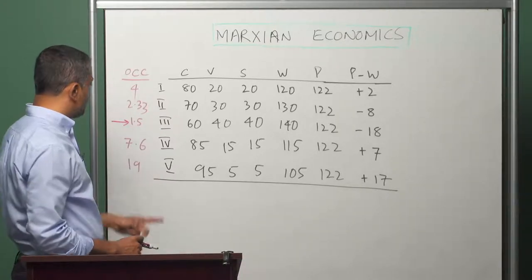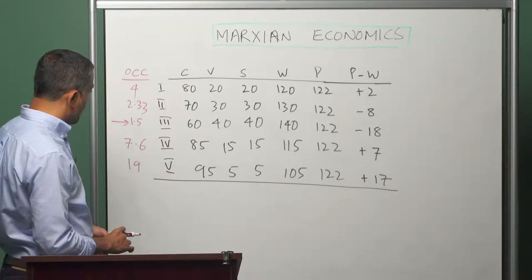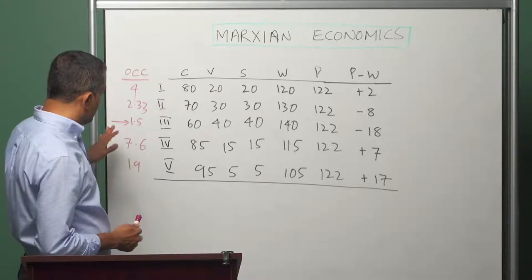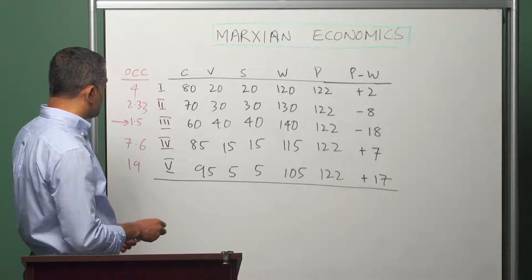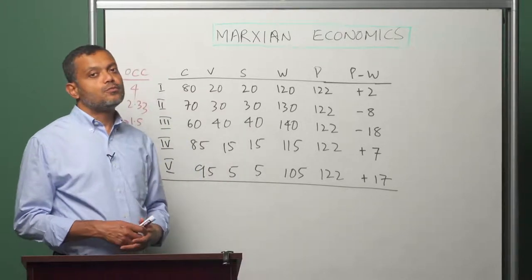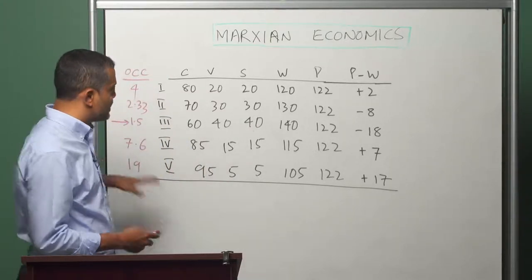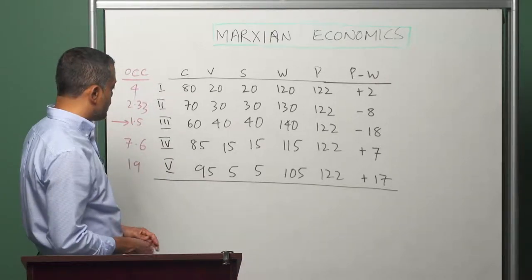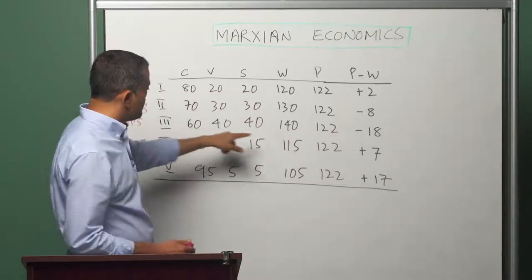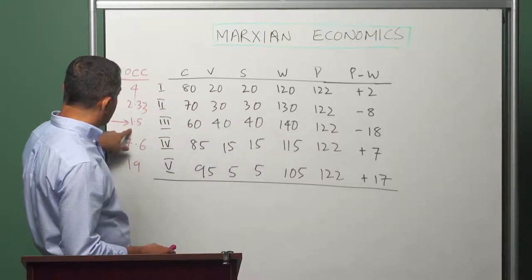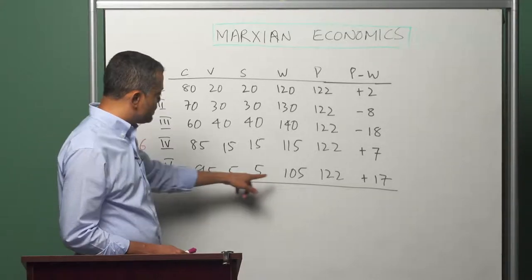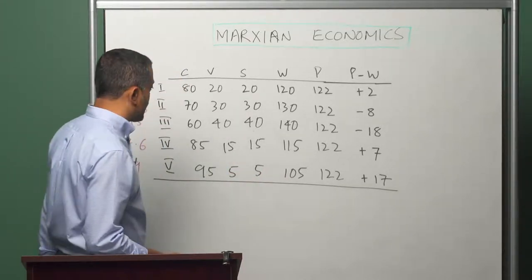The sector with the lowest organic composition of capital is sector 3. A sector with low organic composition of capital generates high amounts of surplus value, and that is reflected here: the total value of output in sector 3 is 140, which is the lowest organic composition sector. On the other hand, the total value of output in sector 5 is 105, which is the highest organic composition sector.